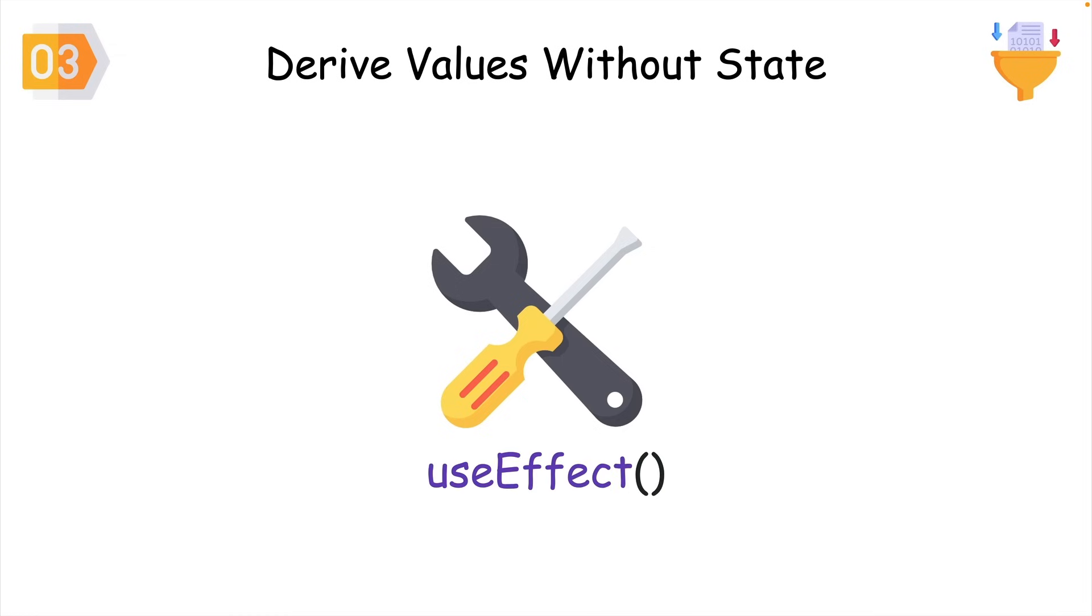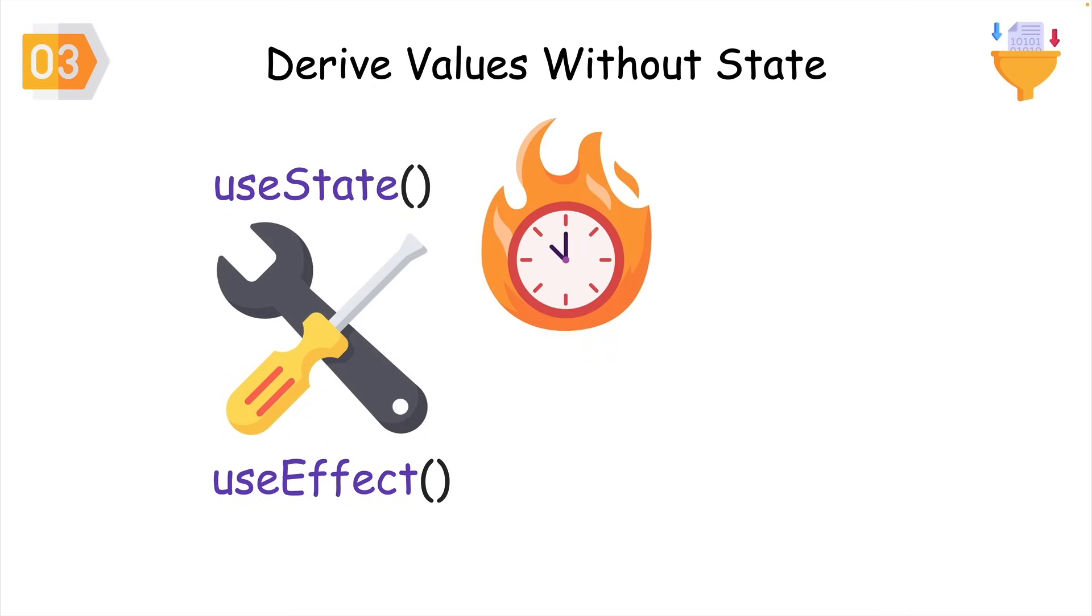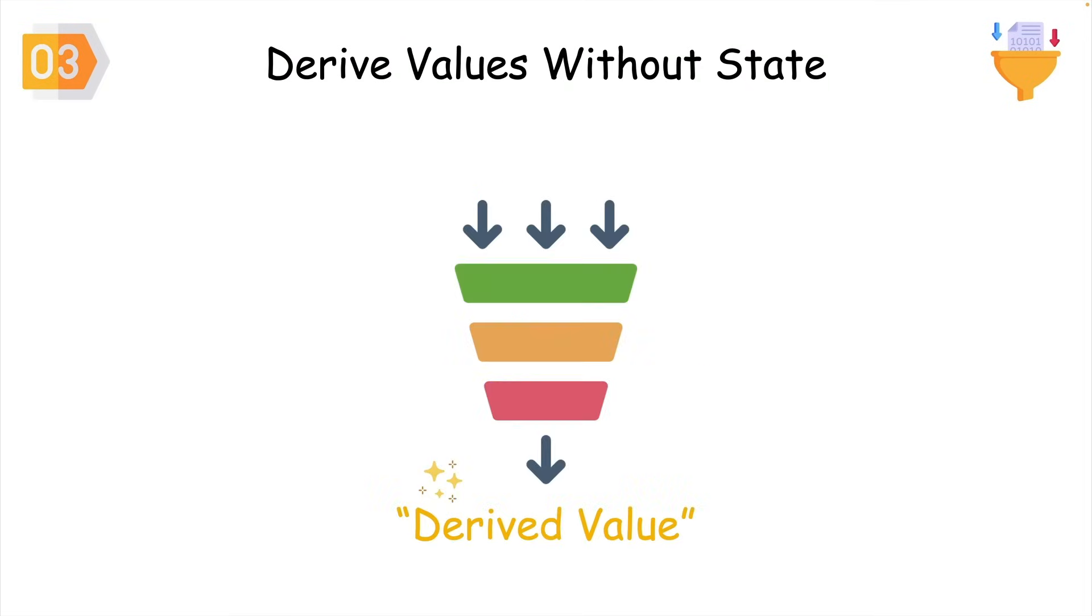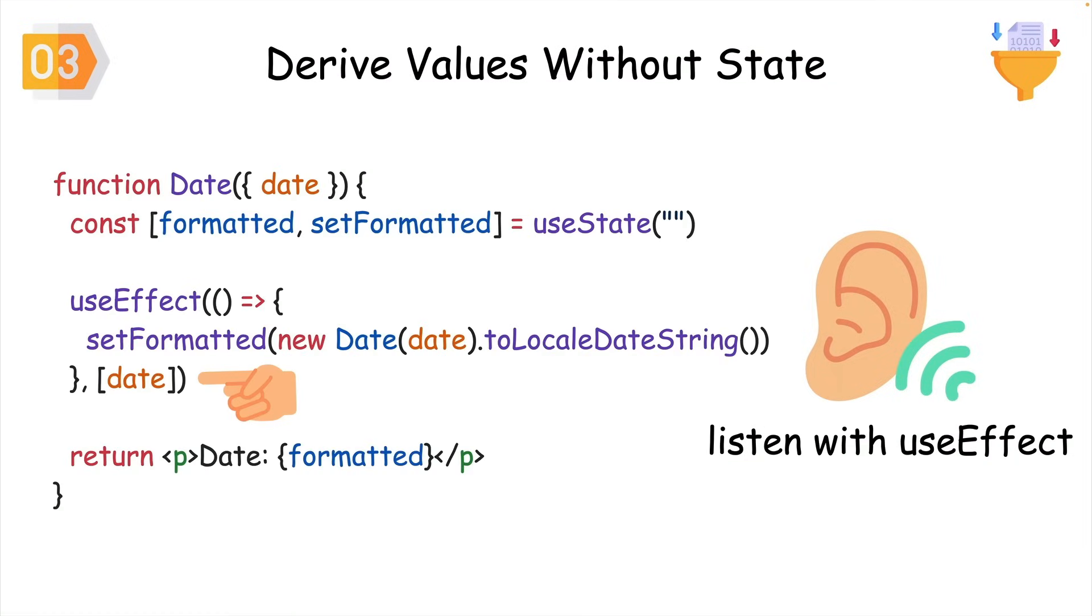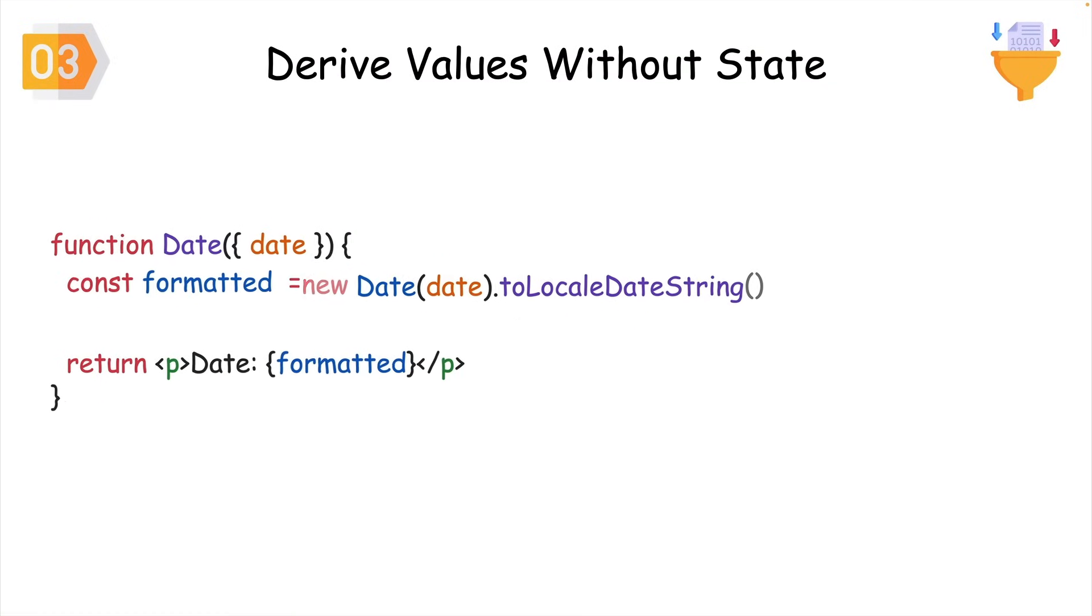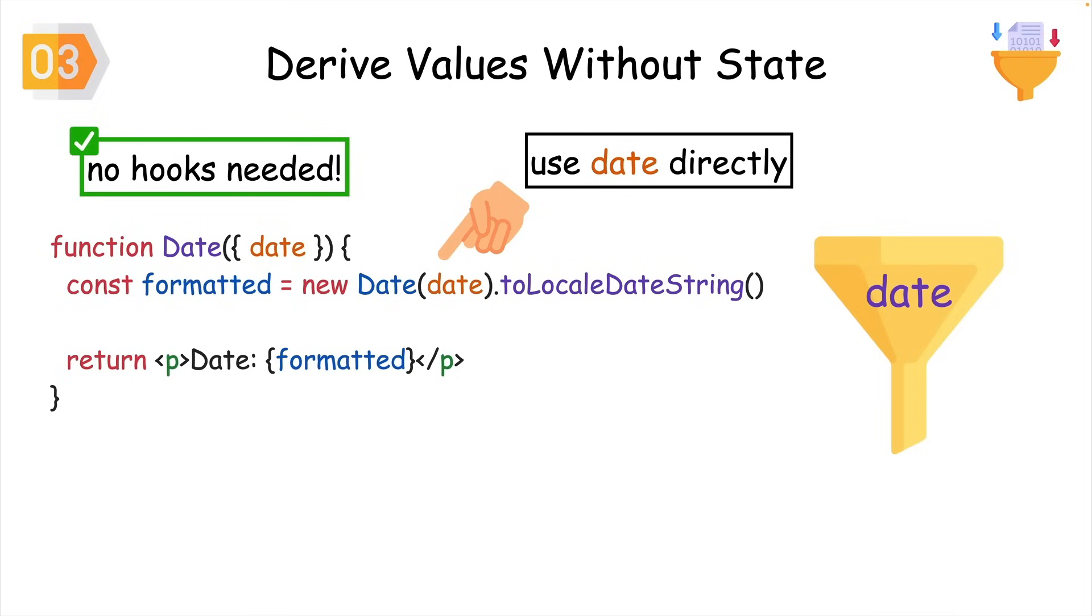I used useEffect and useState all the time when first getting started with React. And a lot of the time, it was for a type of value called a derived value. Derived values are data that are created from other state or props data. When I was new to React hooks, I thought I needed to listen for changes in data with useEffect, like I'm doing here with the date prop. But the cool thing about React is most derived values like this formatted date can be used right inside your component with no hooks needed. If that data can be derived from another state or prop value, just do that during render.